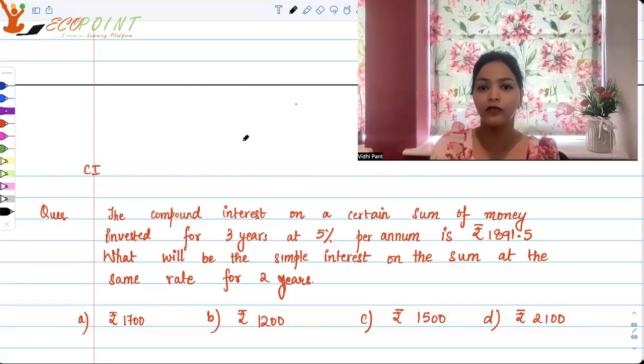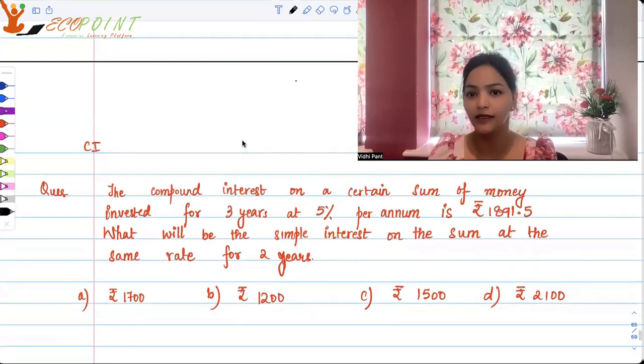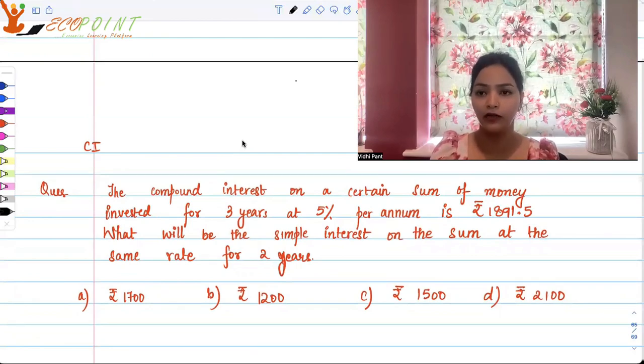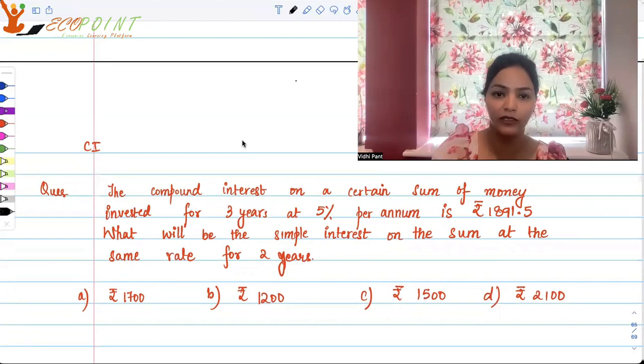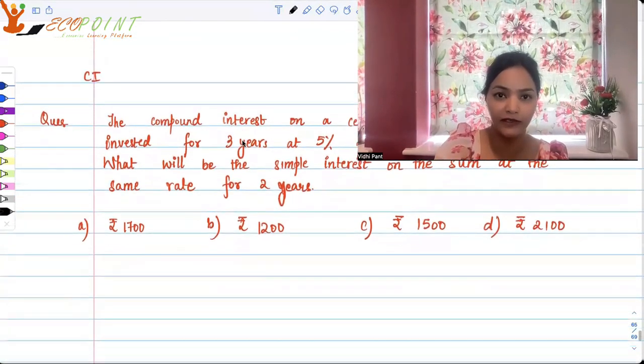So first of all, we should be figuring out what is that sum of amount. And then since we know the compound interest from there, we will find out the principal and we will then find out that on that principal, what would be the simple interest for two years at the same rate that is 5%.